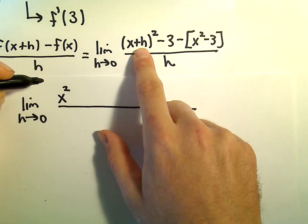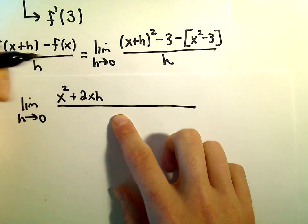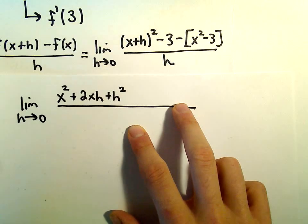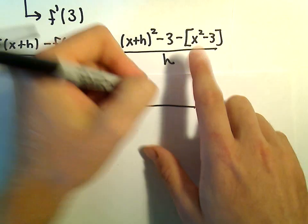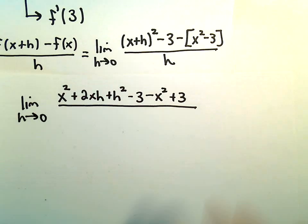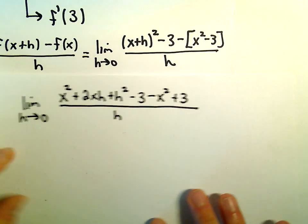2xh, and h times h gives h². We still have minus 3. Distributing the negative gives us -x² + 3, and everything is over h.